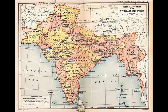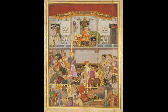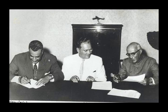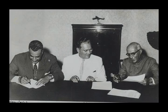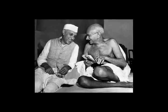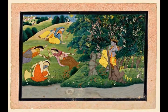Indian cultural history spans more than 4,500 years. During the Vedic period, the foundations of Hindu philosophy, mythology, theology and literature were laid, and many beliefs and practices which still exist today, such as dharma, karma, yoga, and moksha, were established. India is notable for its religious diversity, with Hinduism, Buddhism, Sikhism, Islam, Christianity, and Jainism among the nation's major religions. The predominant religion, Hinduism, has been shaped by various historical schools of thought, including those of the Upanishads, the Yoga Sutras, the Bhakti movement, and by Buddhist philosophy.